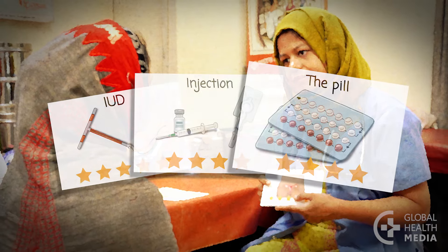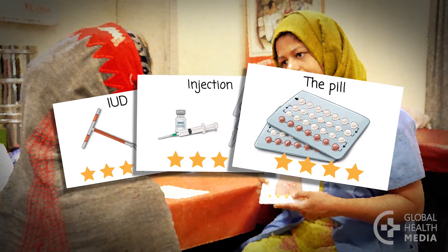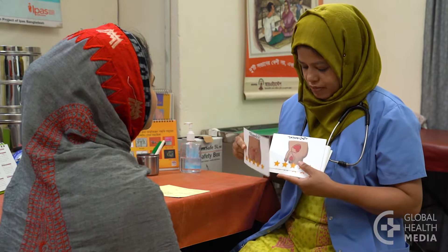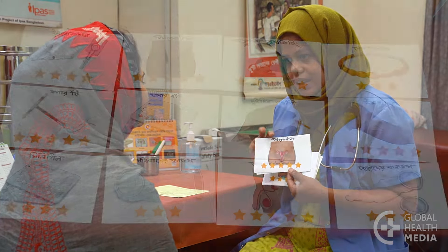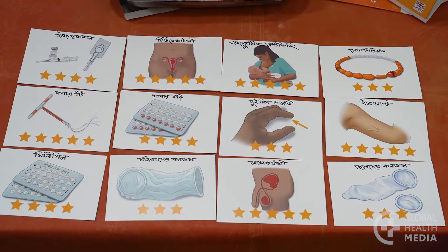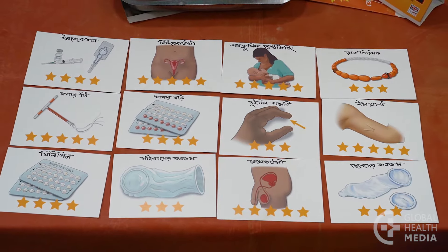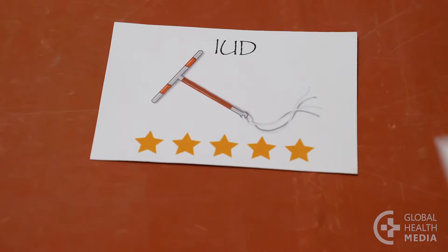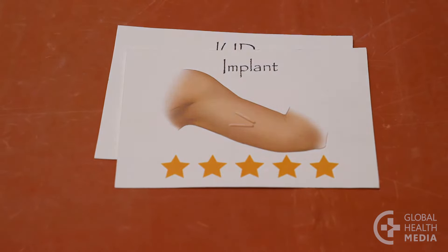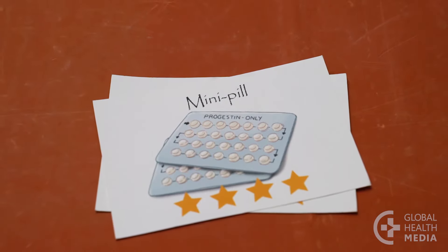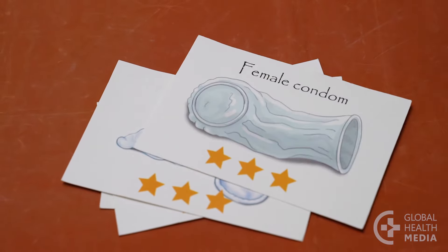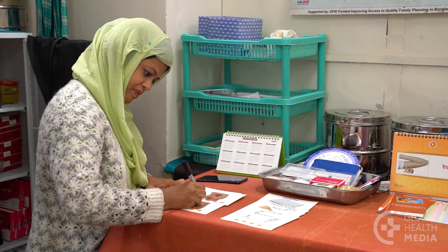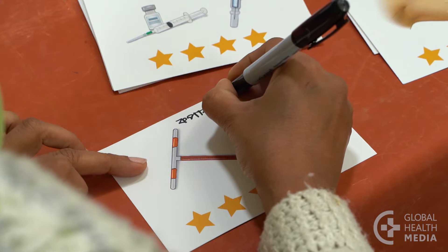Now, introduce the contraceptive method cards. Tell the woman that the cards will help her choose a contraceptive method that best meets her needs and circumstances. Each method card has a picture of the contraceptive method. Effectiveness at preventing pregnancy is ranked in stars. The most effective methods have five stars, very effective methods have four stars, and methods that require extra effort to be effective are given three stars. If you don't have method cards available, they are easy to make yourself.